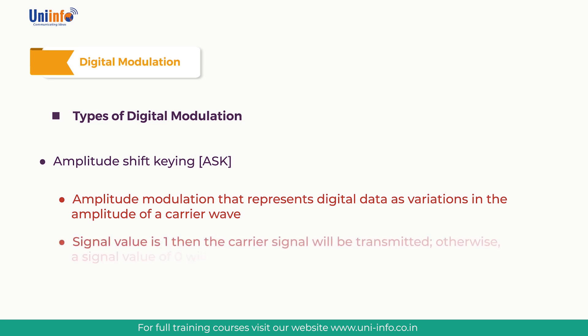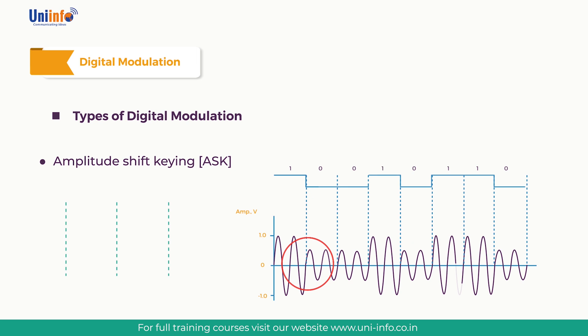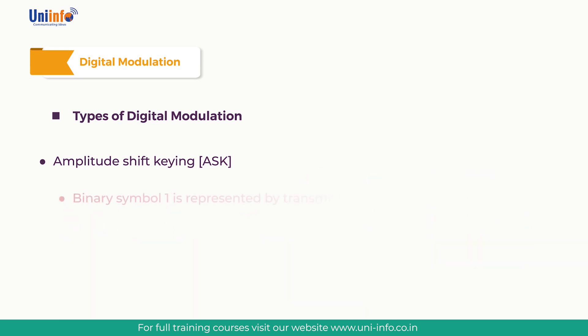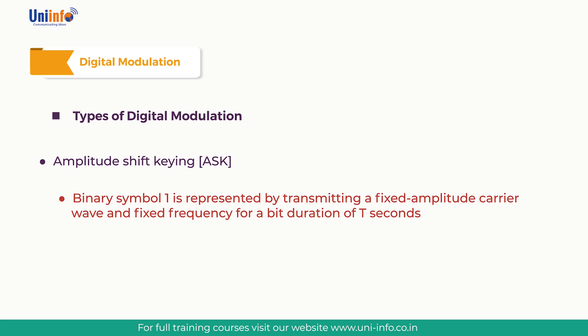If the signal value is one, the carrier signal will be transmitted; otherwise a signal value of zero will be transmitted. In digital communication, ASK is a modulation process which imparts to a sinusoid two or more discrete amplitude levels, related to the number of levels adopted by the digital message. For a binary message sequence there are two levels, one of which is typically zero. Thus the modulated waveform consists of bursts of sinusoid. In an ASK system, binary symbol one is represented by transmitting a fixed-amplitude carrier wave at fixed frequency for a bit duration of T seconds.